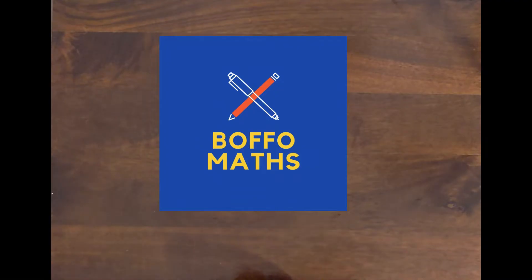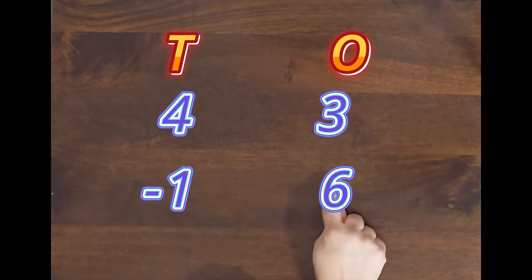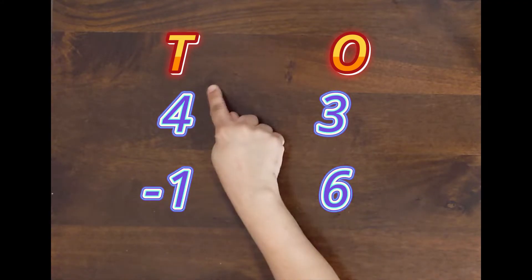Hello everyone and welcome to my YouTube channel Bofo Maths. Today we will discuss the concept of borrow in subtraction. Let's solve the example 43 minus 16. Here 3 and 6 are in ones place and 4 and 1 are in tens place.